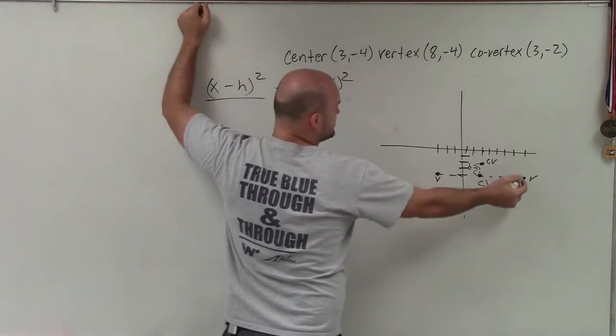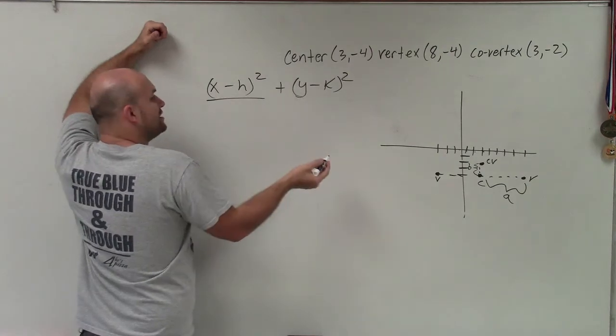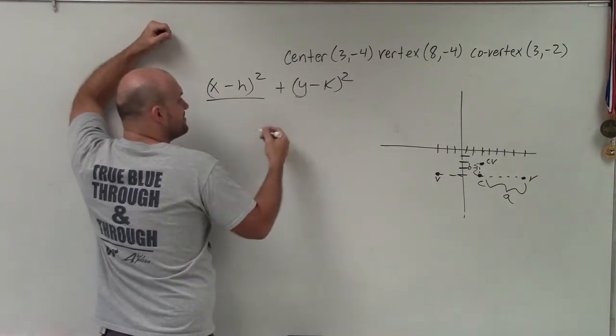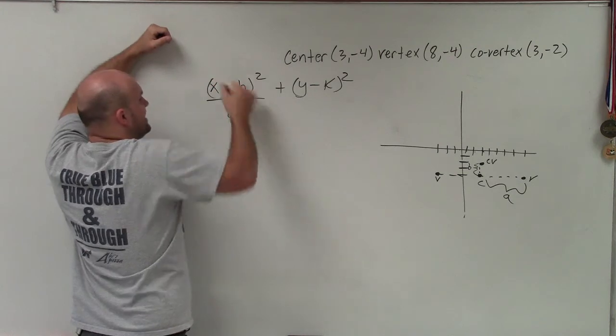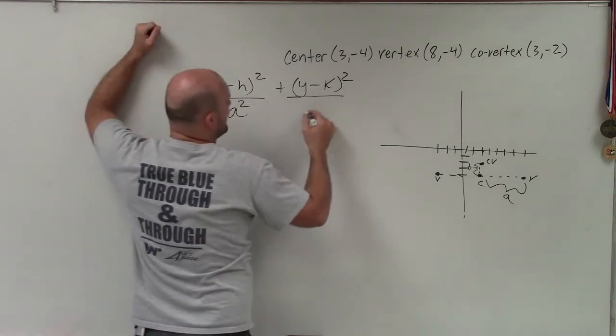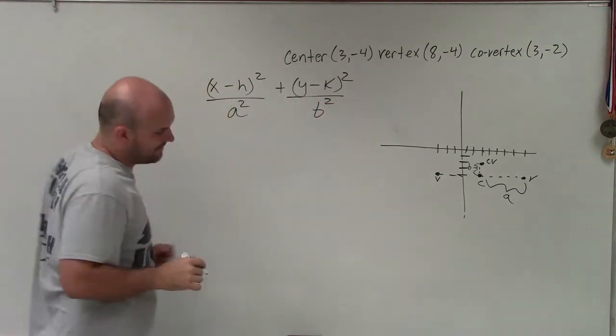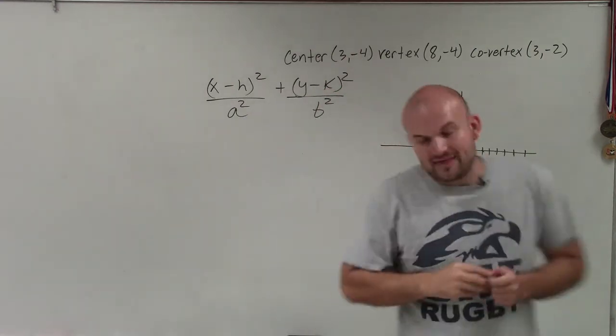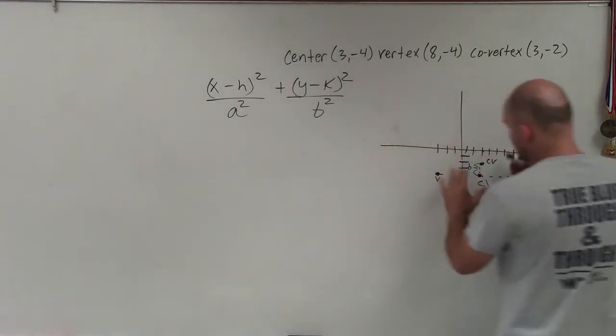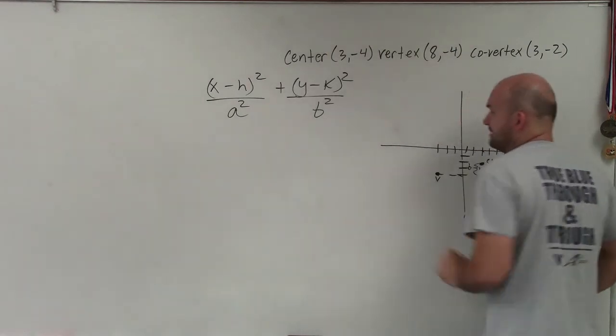...a squared, which is the distance from the center to a vertex, is larger than the distance from the center to the co-vertex. So a squared has to be under the x, and b squared is under the y. That is our general equation. If this was switched, if I had a vertical major axis, then I'd swap the a's and b's.